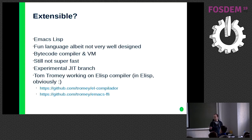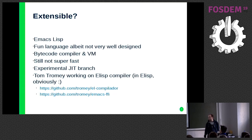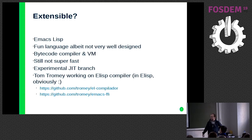Some people have tried to make it faster — they made the bytecode compiler. At the moment there's an experimental JIT branch. I haven't tried it yet, but it looks promising. I've heard it could speed up by about twice in some use cases. I also know Tom Tromey, who has worked on an Elisp compiler that would target LLVM — the compiler itself is written in Emacs Lisp. He also worked on Emacs FFI, which I'll talk about later.